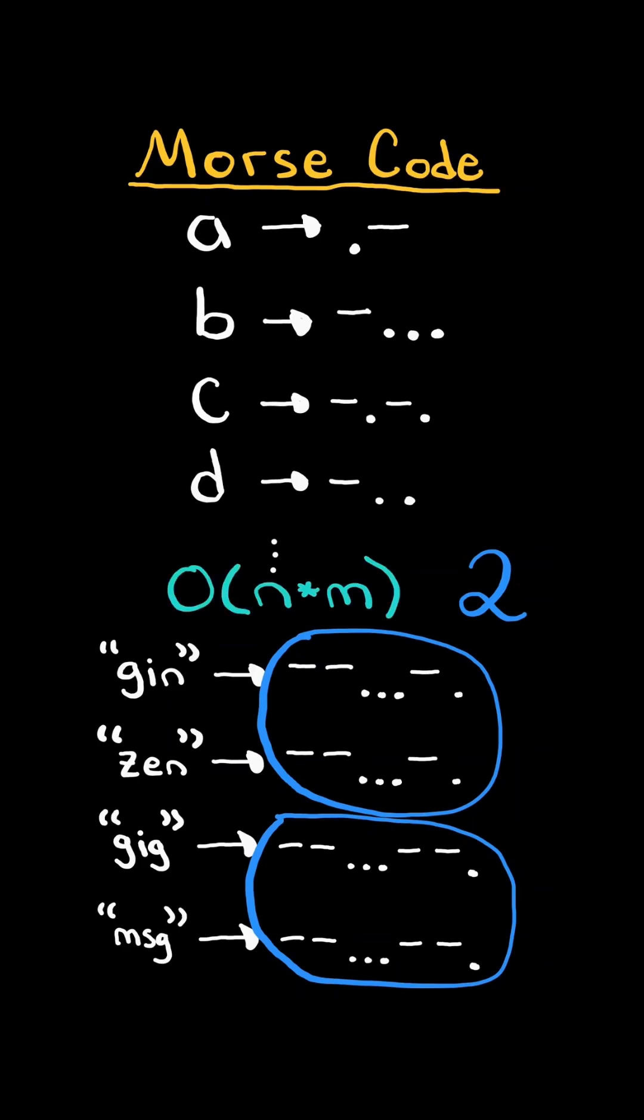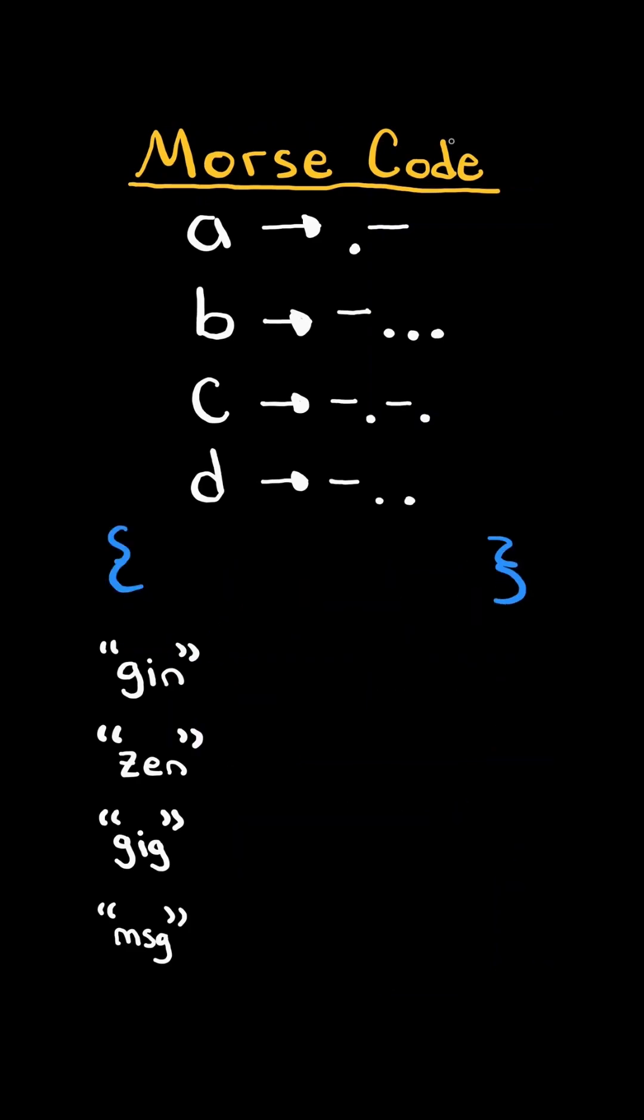We will solve this in O of n times m time where n is the number of words and m is the average length of a word. First we will initialize a set to keep track of all of the unique transformations we have come across.